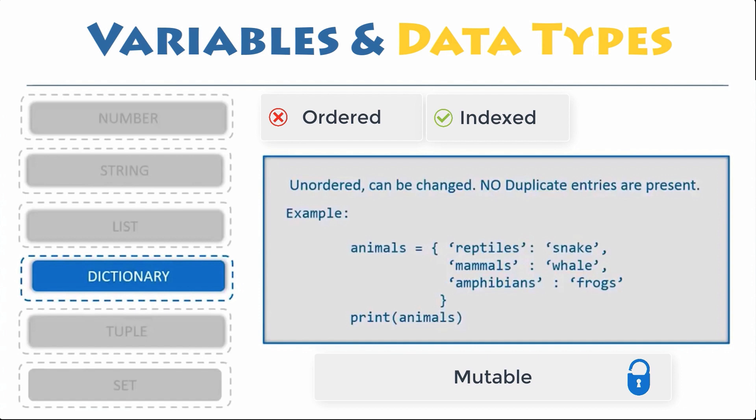In Python, a dictionary can be created by placing a sequence of elements within curly braces. Dictionary can also be created by the built-in function dict. Values in a dictionary can be of any data type, and can be duplicated, whereas keys cannot be repeated.